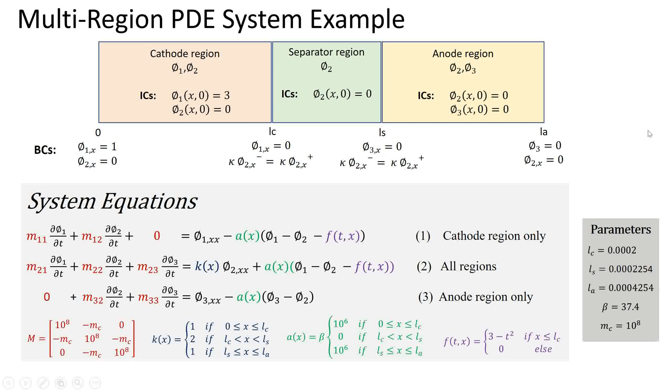The system parameters include the geometrical coordinates LC, LS and LA which take the numerical values shown on the left. Note that I've also chosen to define two extra parameters beta and MC which appear in the function A of x. This will allow us to optimize the system as we will show later.